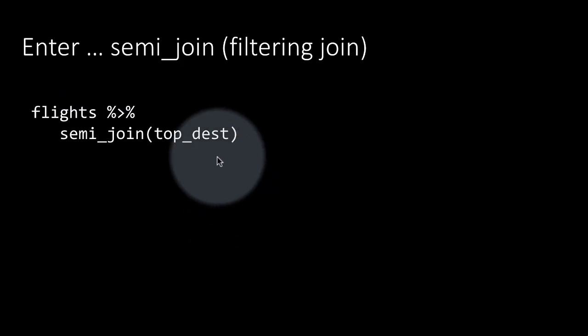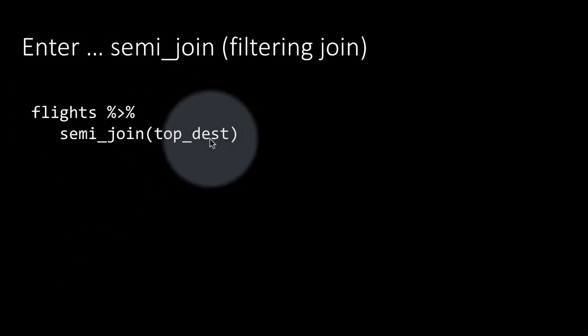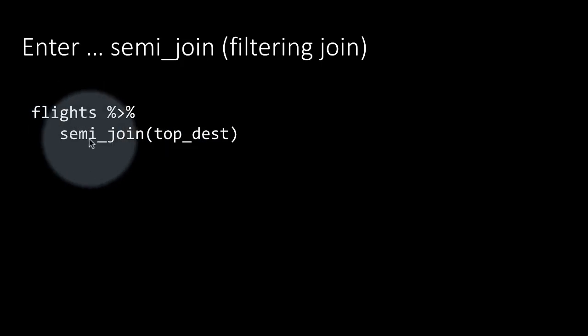A semi-join is sometimes called a filtering join. We take flights semi-join top destinations, continuing from our previous example. Top dest was a list of the top 10 destinations in terms of number of flights. So we want the flights whose destinations were in top dest. Top dest had only the destination code and the number of flights, so the only common column between flights and top dest is the destination code. It's going to join only by destination code and retain only those rows where the dest of flights matches the dest of top dest.